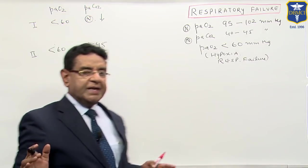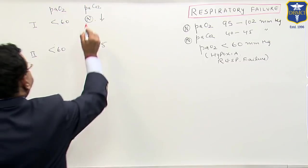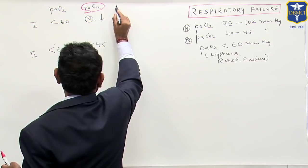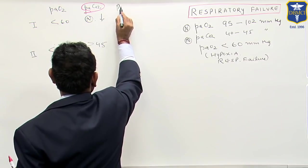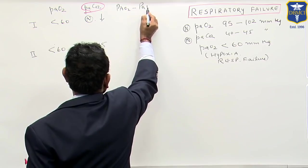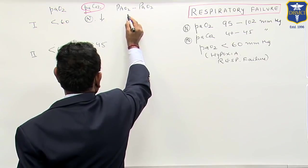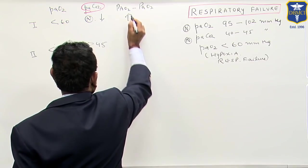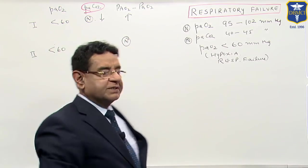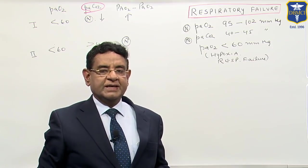That means the main difference in type 1 and type 2 is about PaCO2, but there is one more difference: alveolar-arterial oxygen gradient. This gradient is increased in type 1 and the gradient is normal in type 2.